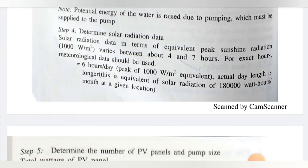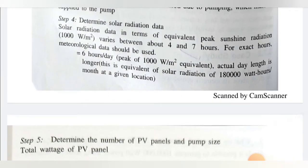Step 4: Determining solar radiation data. Solar radiation in terms of equivalent peak sunshine at 1000 W/m² varies between about 4 to 7 hours. For exact values, meteorological data should be used. Here we take 6 peak sunshine hours per day, equivalent to a solar radiation of 180,000 Watt-hours per month at a given location.